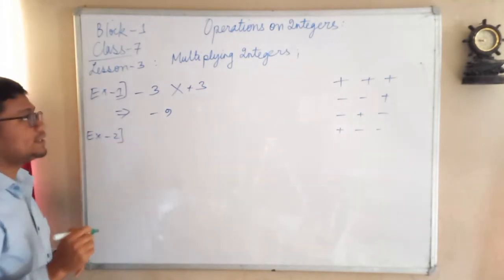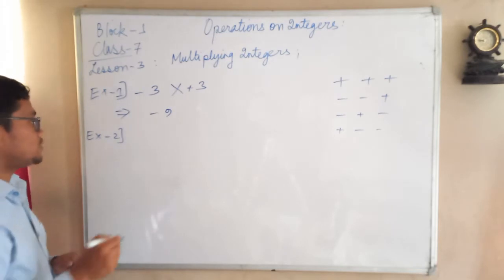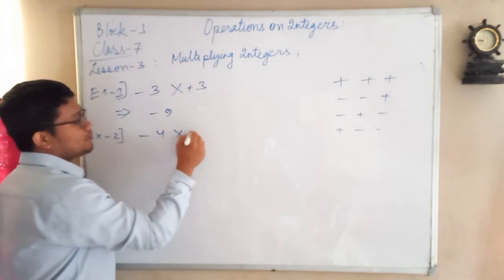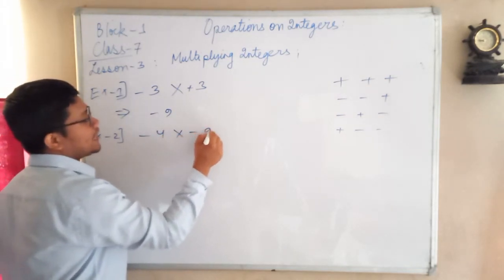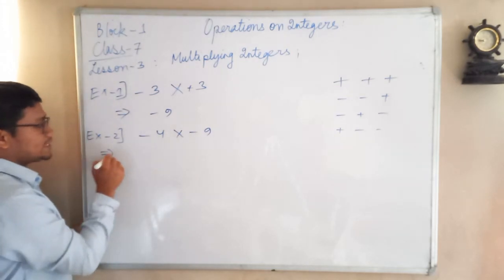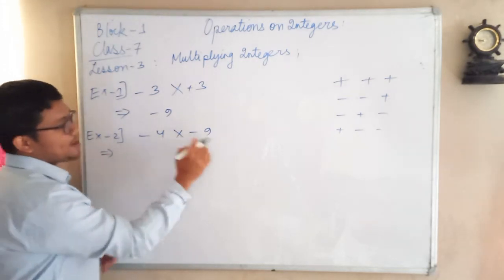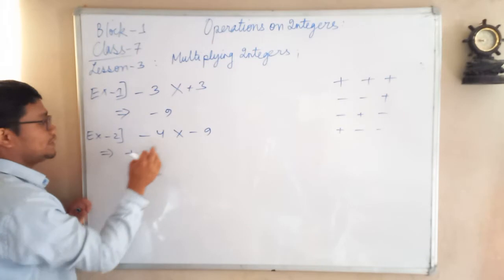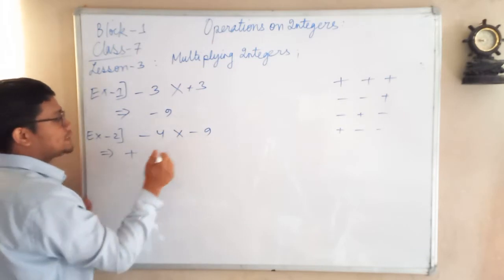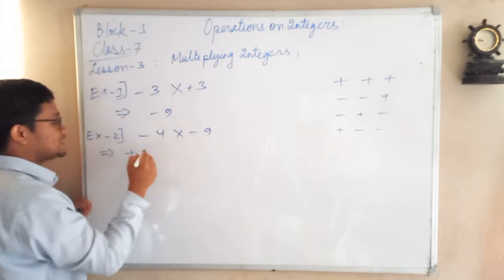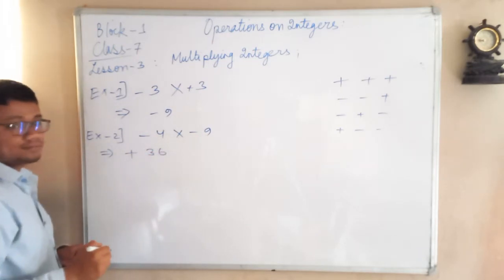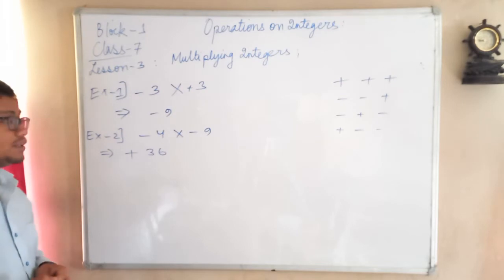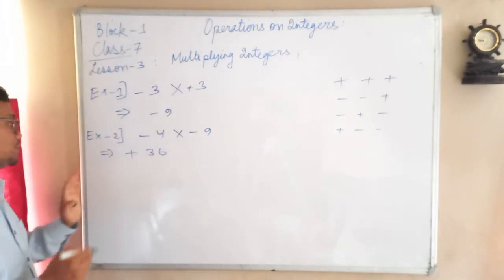You have to keep this in mind — not only the numbers, you have to multiply the signs also. For example, minus 4 into minus 9: minus times minus is plus, and 4 times 9 is 36. So the answer is positive 36.